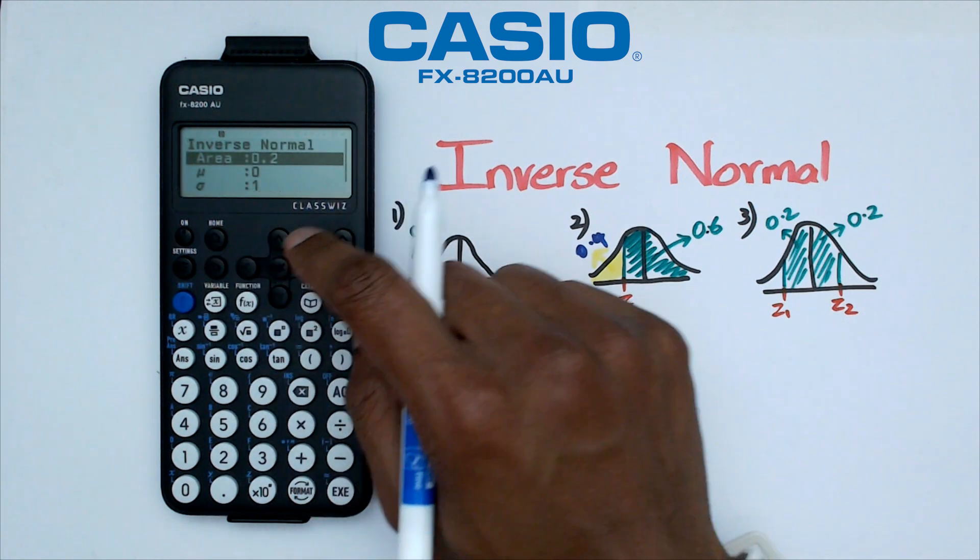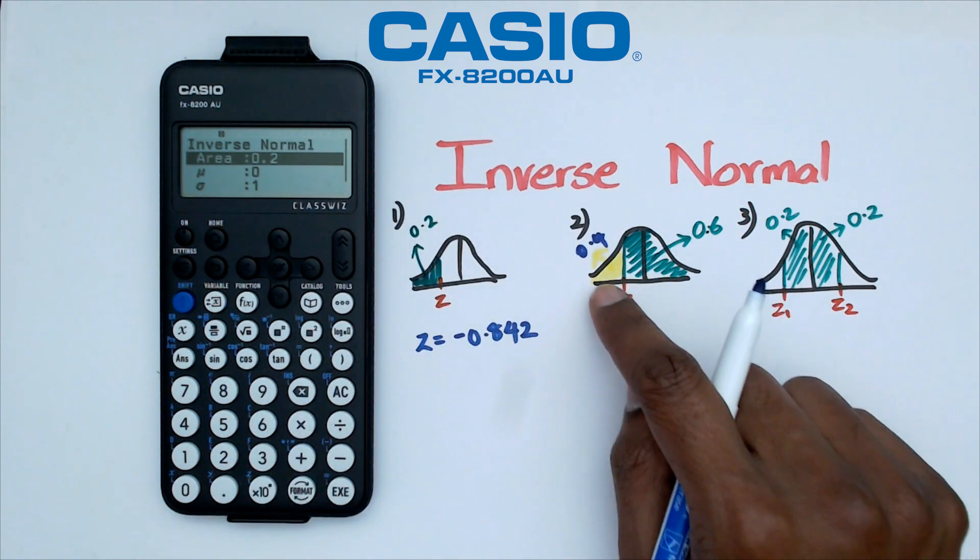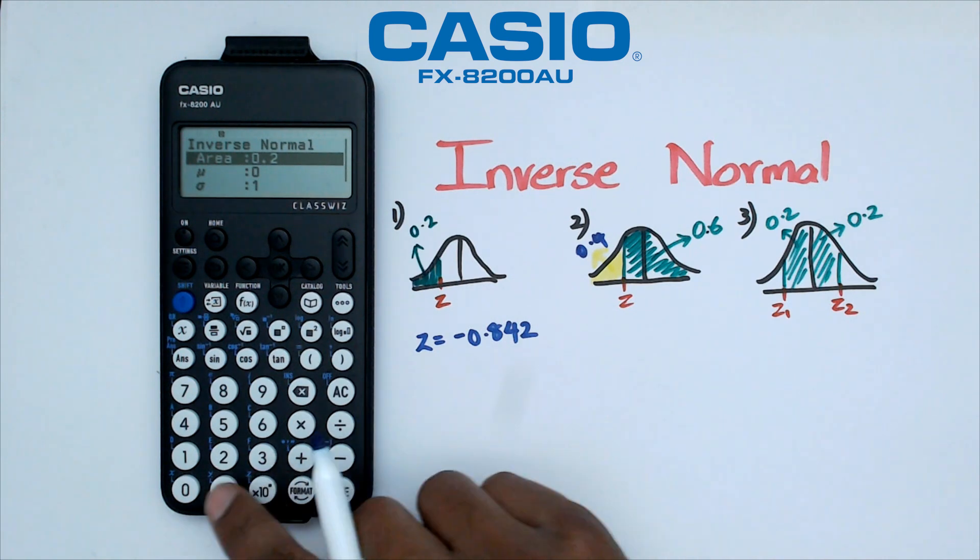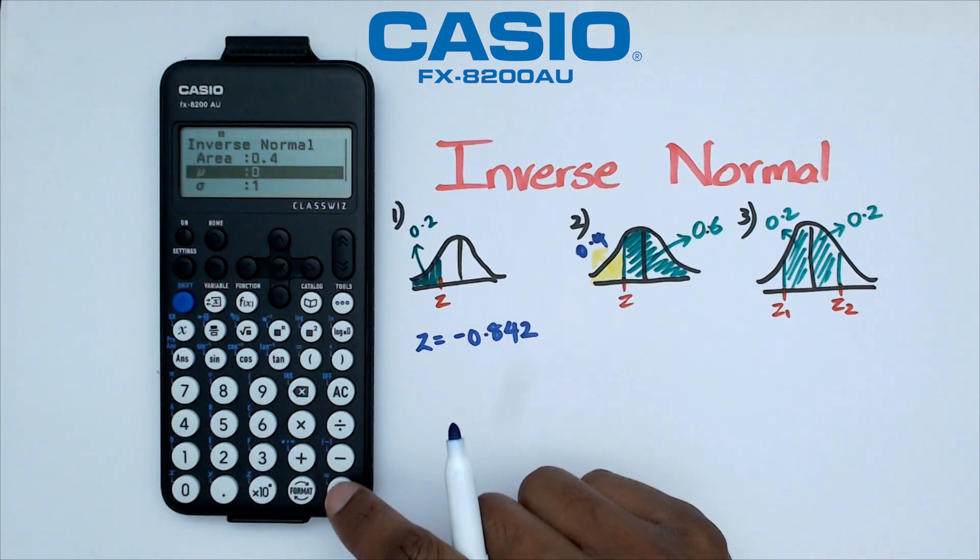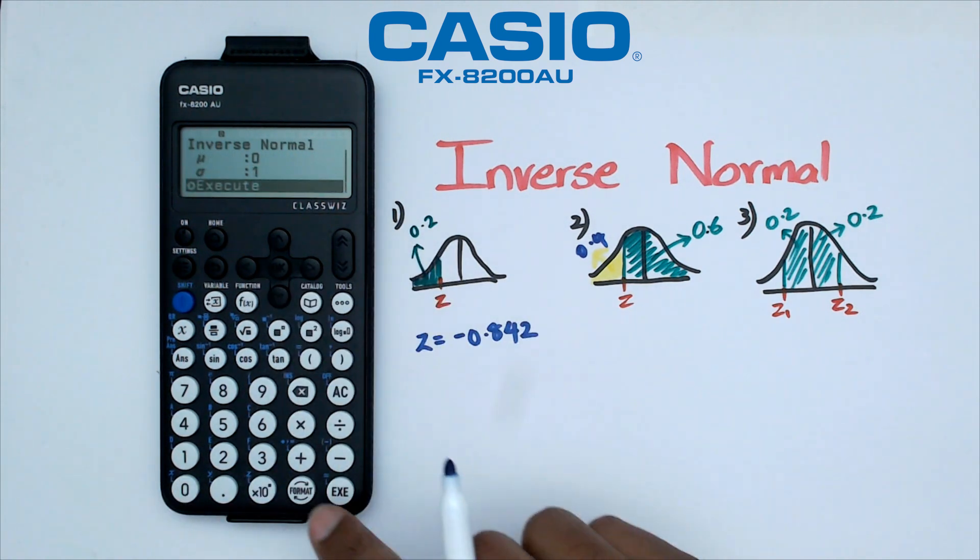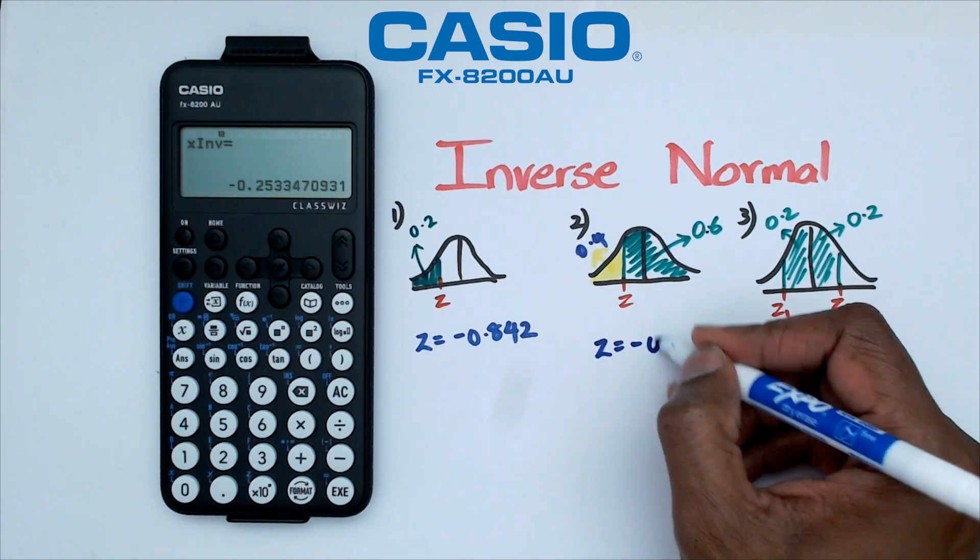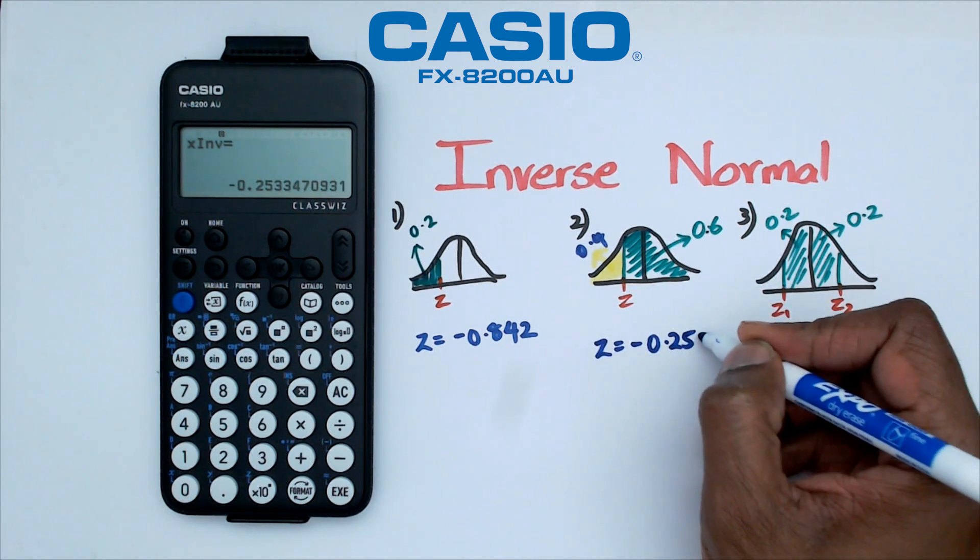So in our calculator what we're going to do is we're going to go into area and we're actually going to put in 0.4 which is the yellow part there. So we're going to put in 0.4 and when we do that mean is still 0, standard deviation is 1. We're going to go down and execute and once again we get a Z value of negative 0.253.